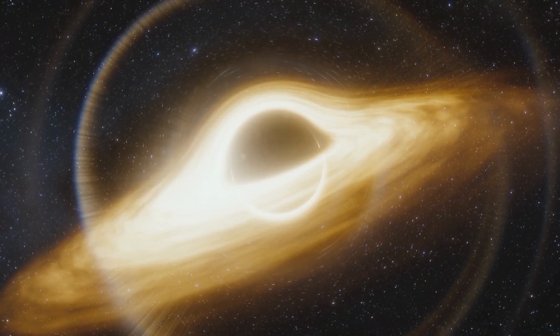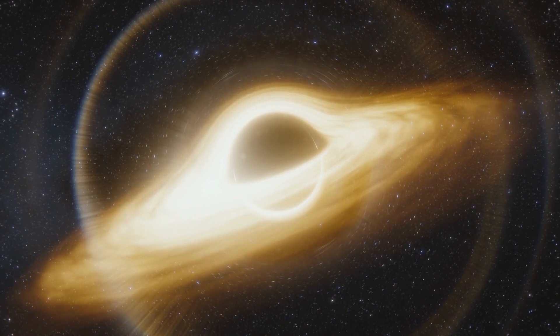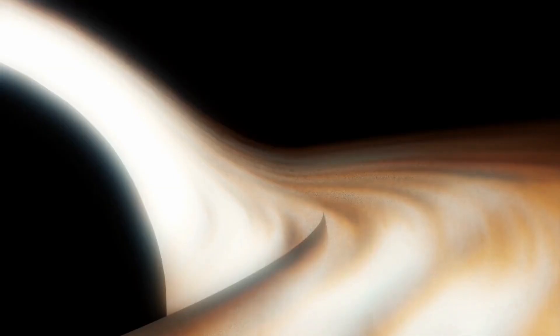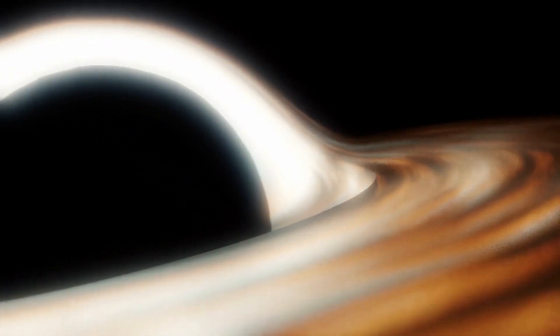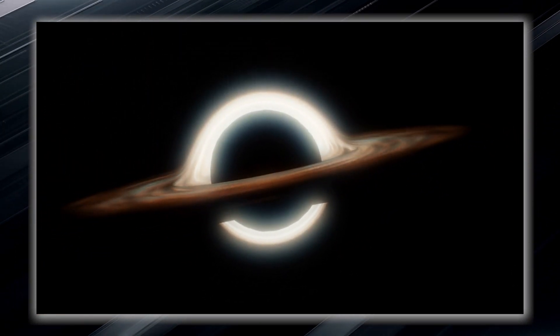This is where things become truly extraordinary. The gravitational pull near a black hole is so incredibly strong that it creates what is known as an event horizon. The event horizon is not a physical barrier, but rather a region where space gradually bends. It is an invisible boundary or point of no return.